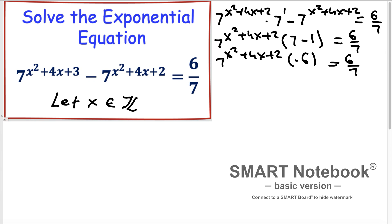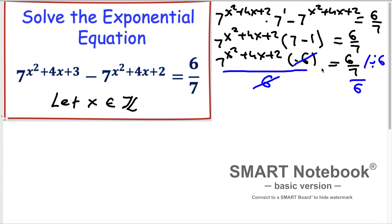Now let's divide both sides by 6, since we have 6 as a common factor on both sides. Dividing both sides by 6, the 6s simplify. What remains is 7 to the exponent (x² + 4x + 2) is equal to 1 over 7.